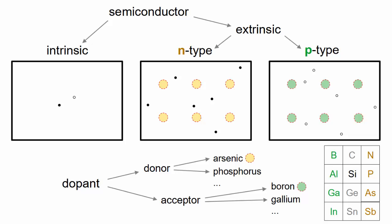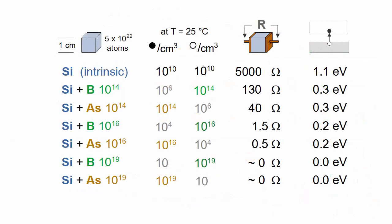In the previous video, we saw that adding a dopant to silicon greatly increases the number of mobile charge carriers.